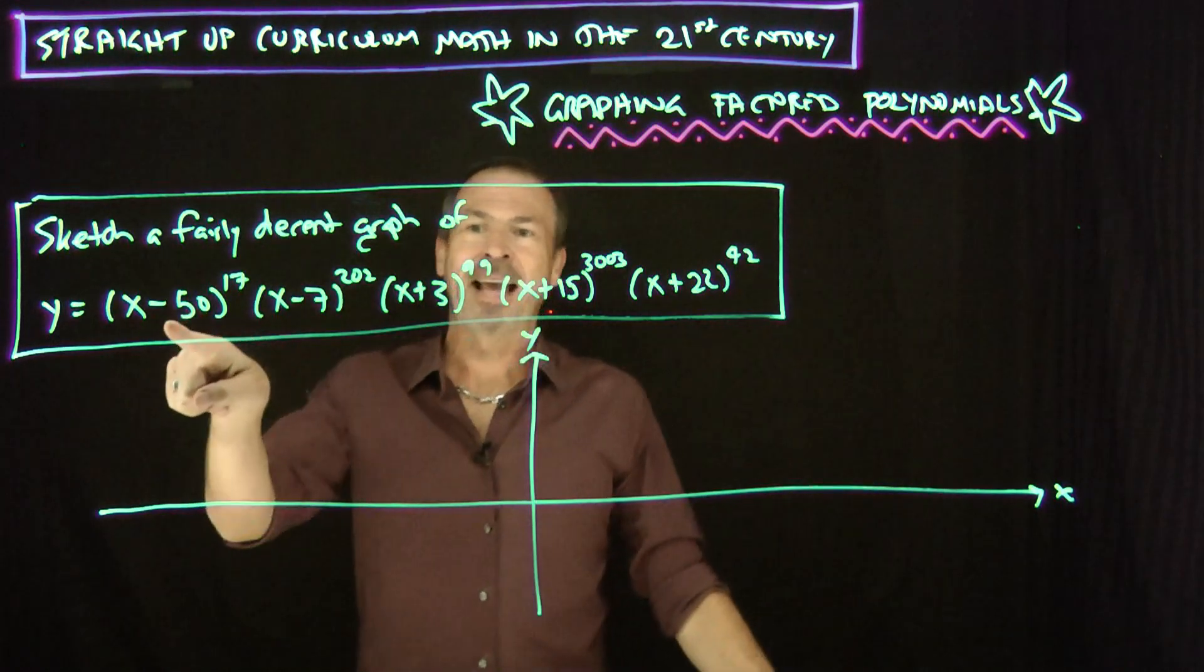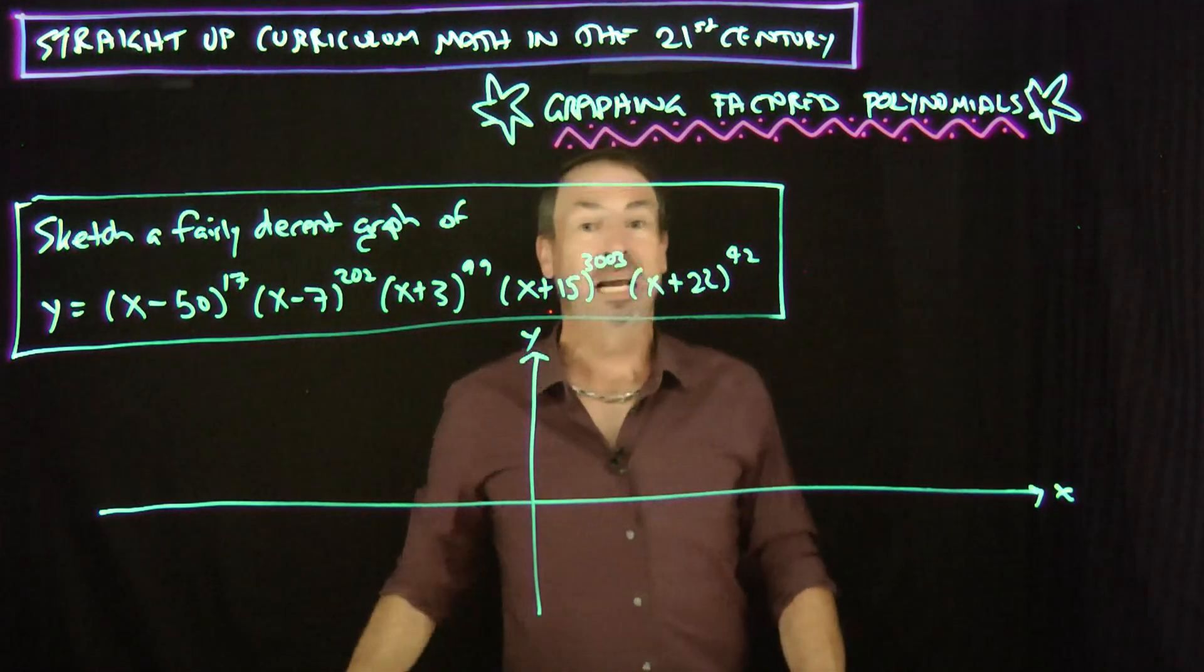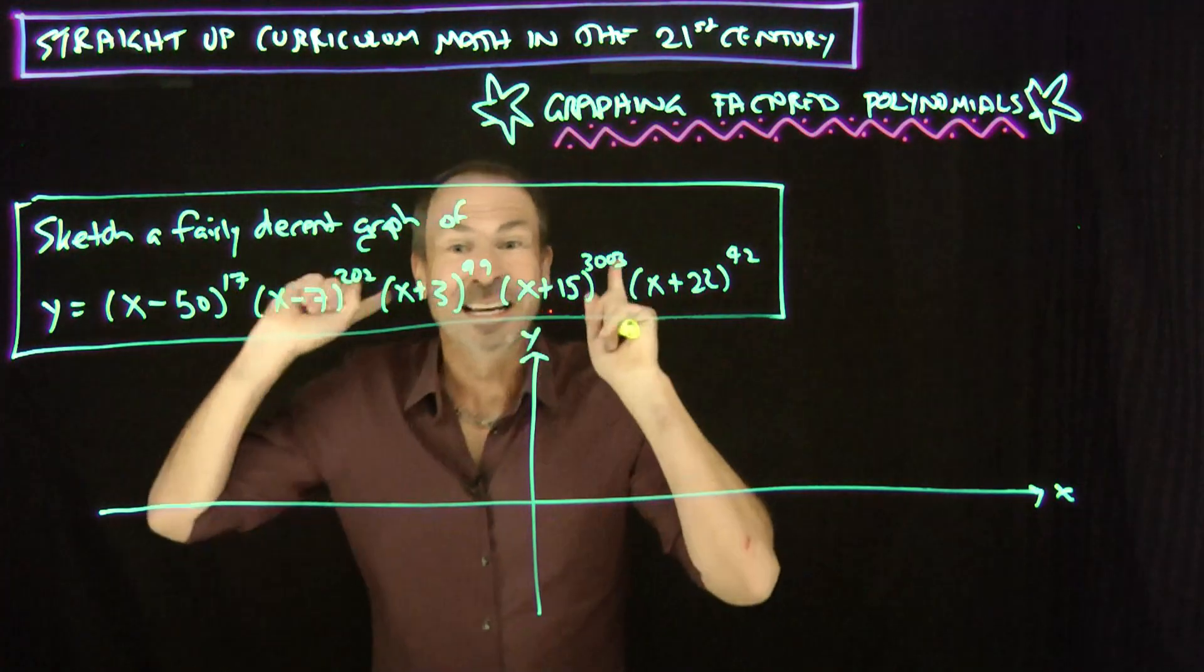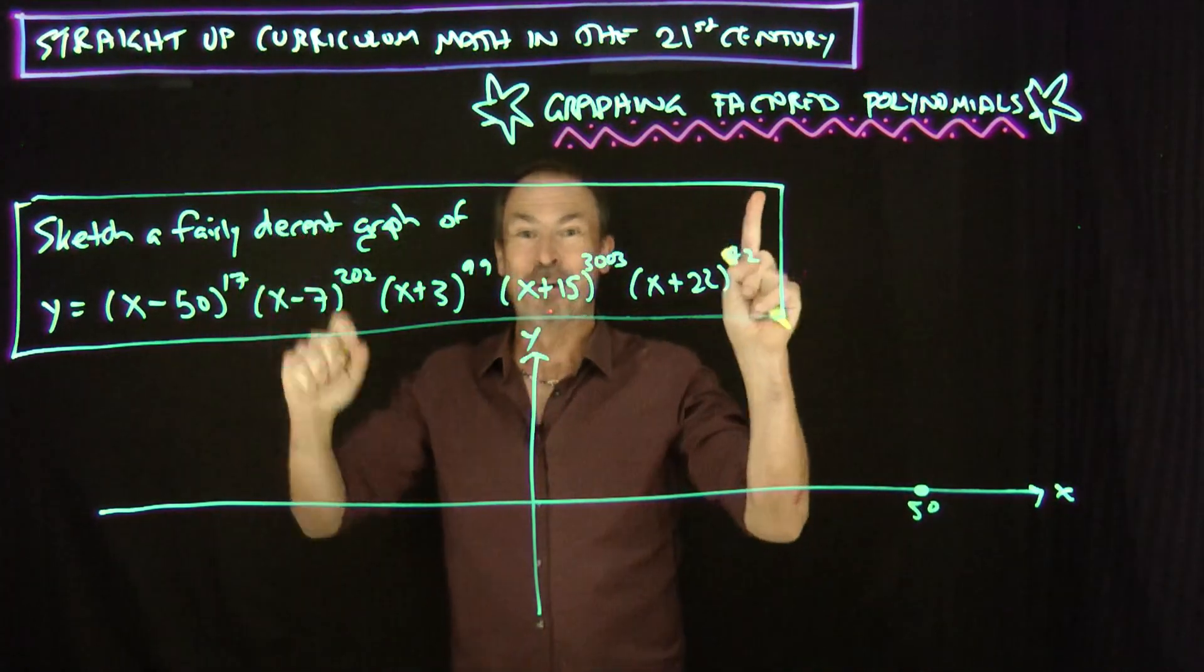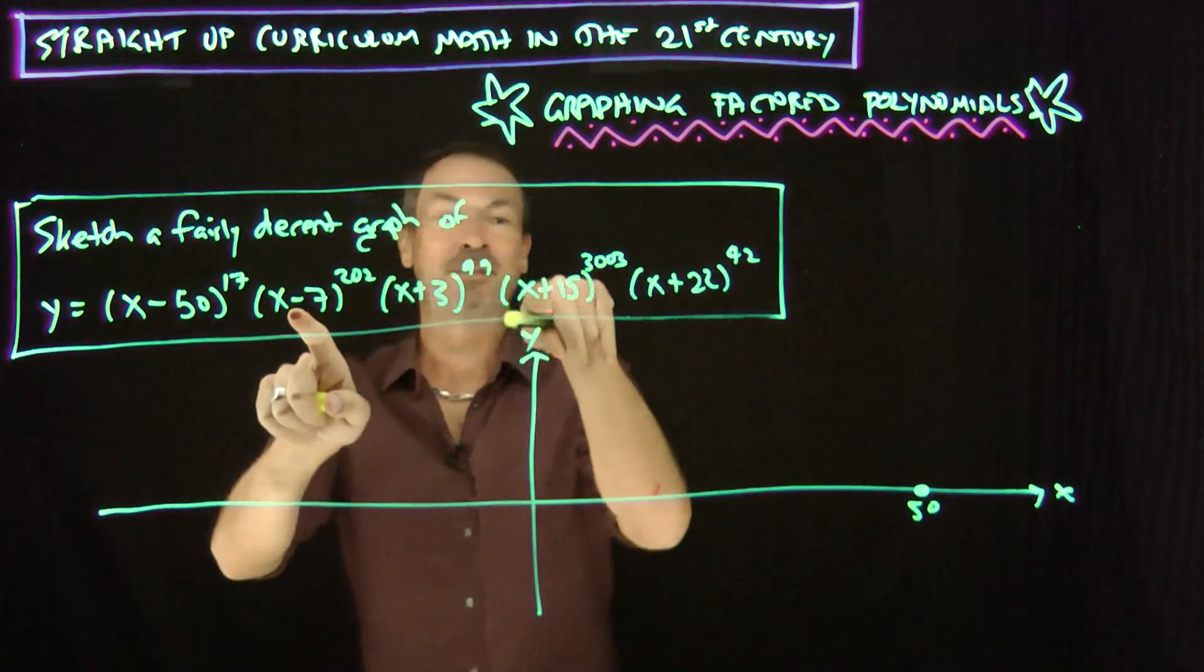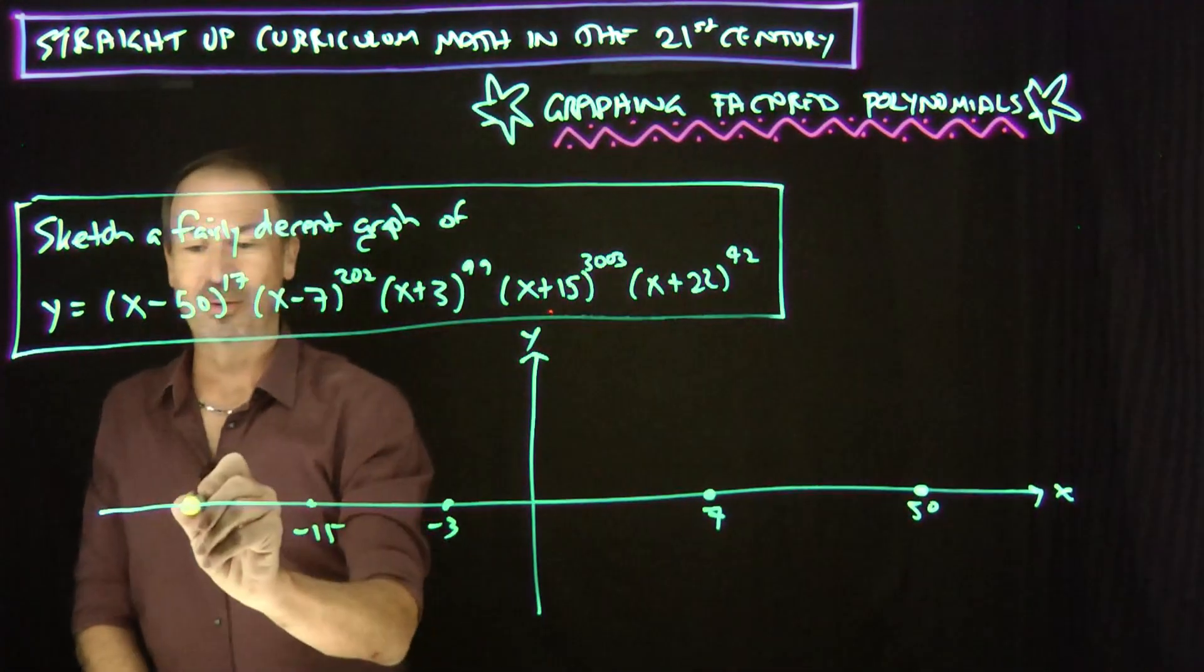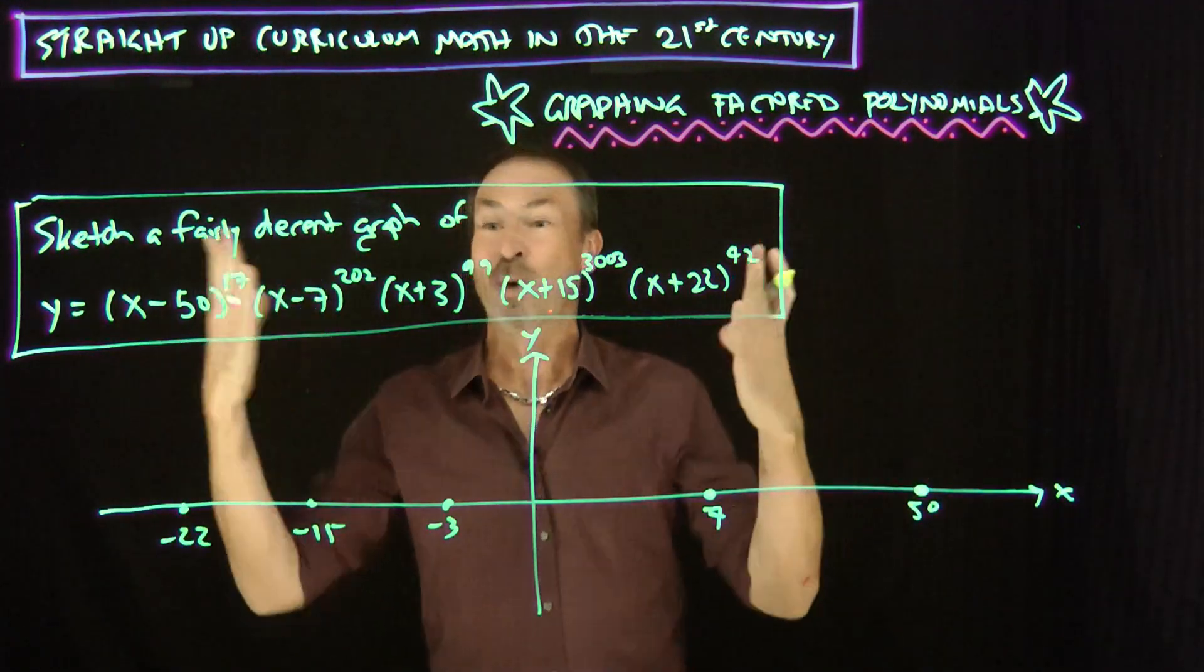I mean, without knowing anything, I can at least see that x equals 50 is interesting. And x equals 7 is interesting. x equals negative 3, x equals negative 15 and x equals negative 22. Also interesting. In fact, if I put in x equals 50, I get 0 to the 70th power times 0 times a whole bunch of stuff, 0. Oh, I can at least plot one point. At x equals 50, y is 0. Bingo! I've got one data point. I've started sketching the graph. This is fabulous. x equals 7, something times 0 times something times something will still be 0. So at 7, it's also 0. At negative 3, it's also 0. At negative 15, it's also 0. And at negative 22, it's also 0.